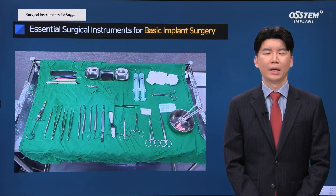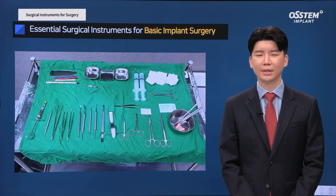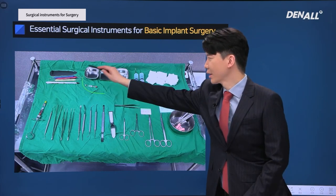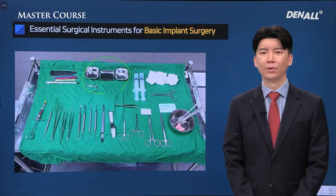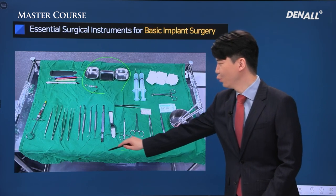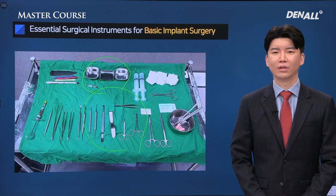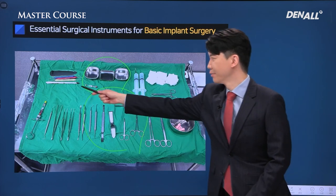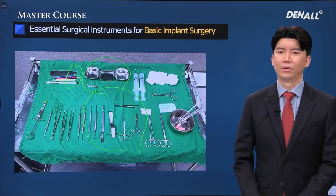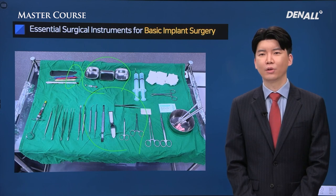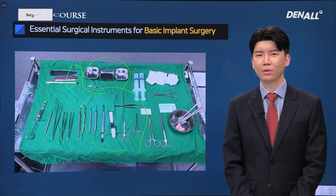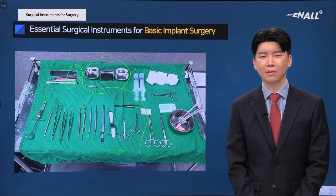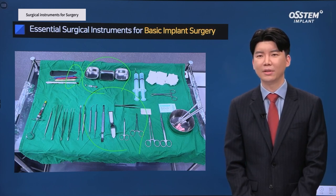This is what my main surgical cart looks like. It can be divided into a top and bottom part. As for the top part, I assign tools that I use from time to time. There's a curette for periodontal treatment, a steel ball for use in GBR, and an anesthetic ampoule in case additional anesthesia is required.